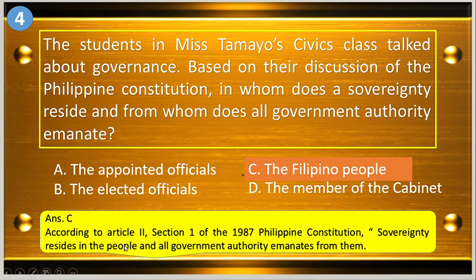It's letter C because according to Article Two, Section One of the 1987 Philippine Constitution, sovereignty resides in the people, and all government authority emanates from them.